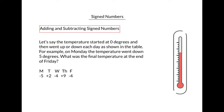Let's apply what we've learned so far. Let's say that the temperature started at 0 degrees and then went up or down each day as shown in the table. To find the final temperature at the end of Friday, we first need to pick a 0 point on our temperature scale — it doesn't matter where — and then we can add positive and negative numbers to our scale, positive going up and negative going down.